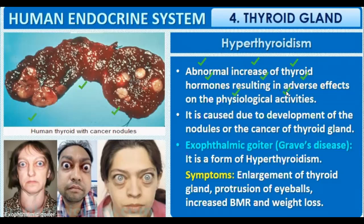In the thyroid gland, there is an abnormal increase due to adverse effects on physiological activities. It is caused by the development of nodules and cancer of the thyroid gland, where nodes or cancerous growth affect thyroid functioning, causing it to secrete more hormones — this is called hyperthyroidism.